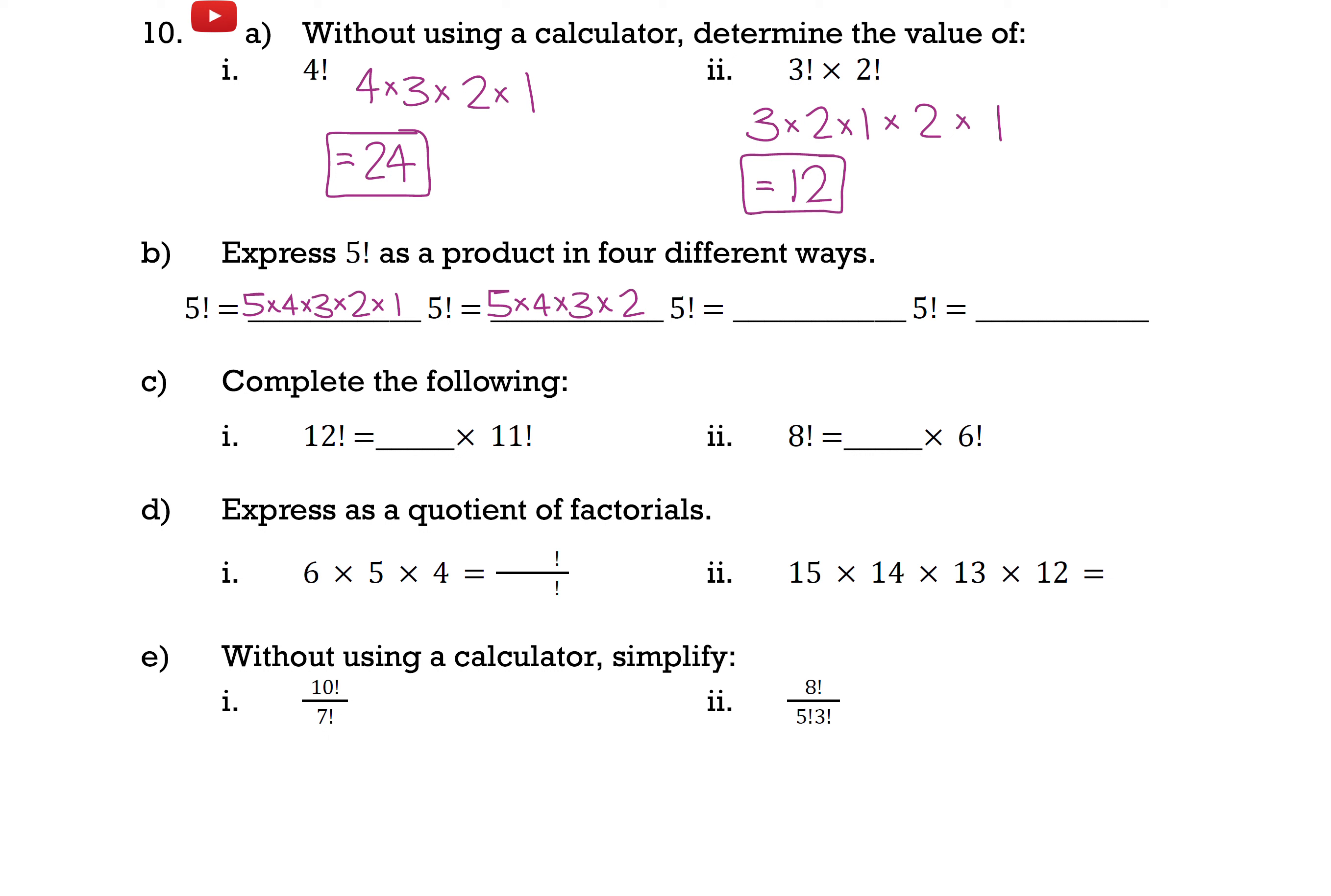Now I could keep going with this, because I know that 3 factorial is just 3 times 2. So I could write this as 5 times 4 times 3 factorial. Or I could go even further and write this as 5 times 4 factorial. So there are quite a few different ways to represent factorials, and depending on what type of question you're solving, it might be easier to represent a factorial in one of these ways.